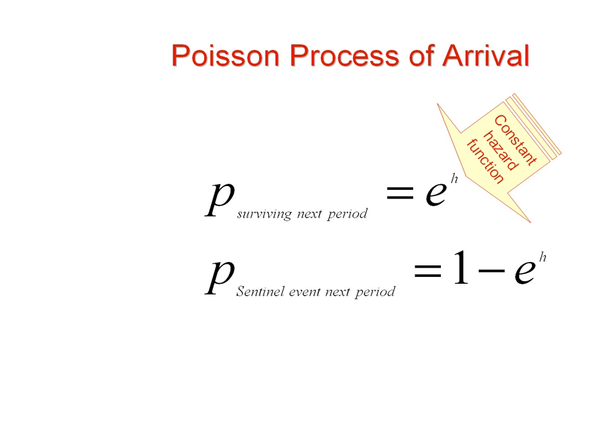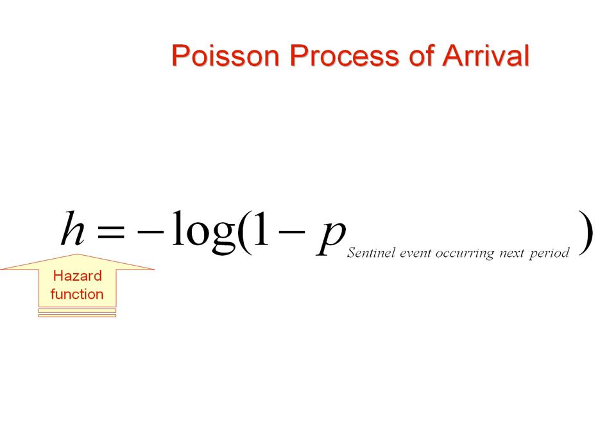The Poisson formula calculates the relationship between the probability of a sentinel event occurring in the next time period based on the event's constant hazard rate, h. Note that e to the power of the negative hazard rate is the probability that the event will not occur during the time period; 1 minus this is the probability that it will occur. The Poisson formula can also be turned around to calculate the hazard rate — solving for h, we obtain a way of calculating the hazard function from the probability of occurrence of the sentinel event. This formula is commonly used in risk analysis because the Poisson process allows interpretation of a hazard rate as the count of arrivals of a random event.